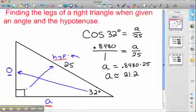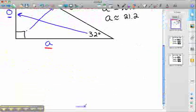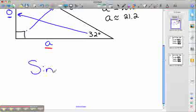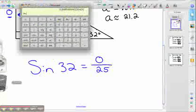So we go back. We'll set up our relationship. Sine of 32 equals opposite, which we don't know yet, over hypotenuse. So let's get our calculator out. Type in 32, but this time hit sine, and it's .5299.